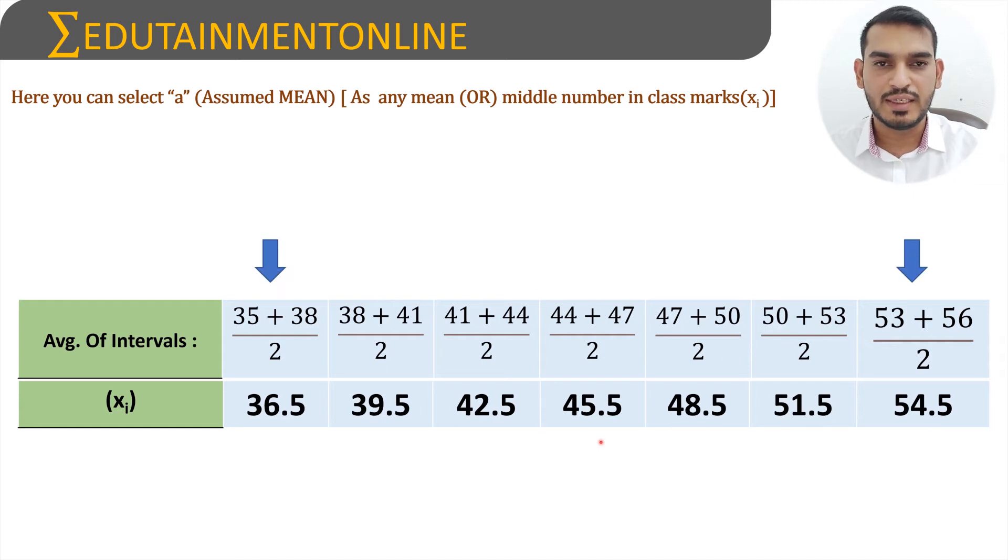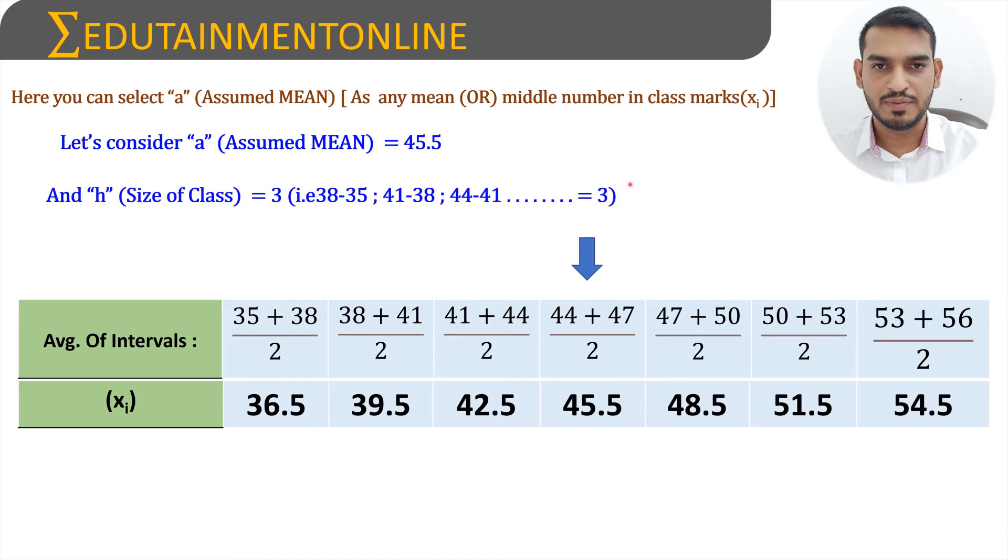So now to find the mean, assumed mean which is the middle term, we will eliminate the last terms and the last two terms and the last three terms. Now we have the middle term which is 45.5. So we will take the assumed mean as 45.5, and the size of the class denoted by h is the difference between the intervals 38 minus 35 or 41 minus 38, which is 3.